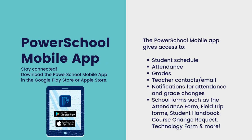Stay connected with the PowerSchool Mobile app. Download PowerSchool Mobile in the Google Play Store or Apple Store. PowerSchool Mobile gives access to your student's schedule, attendance, grades, teacher contacts and emails, notifications for attendance and grade changes, and school forms such as the attendance form, field trip forms, the student handbook, course change requests, technology forms, and more. Students in grades 5 and up can also download the app and sign in with their student login and password, giving them access to their class and grades information at their fingertips.